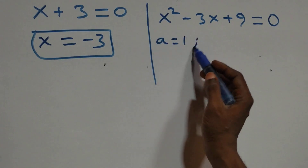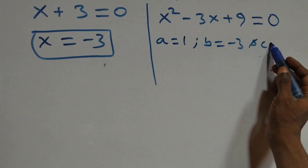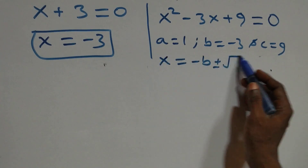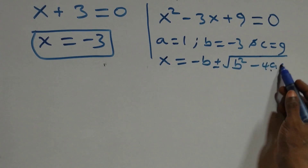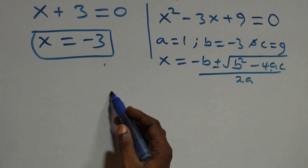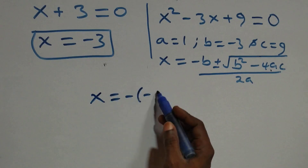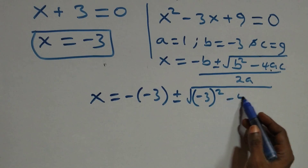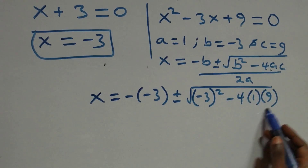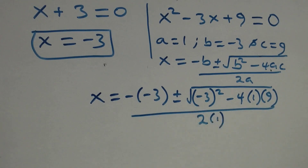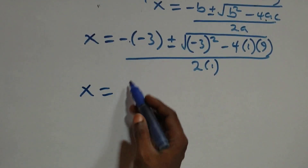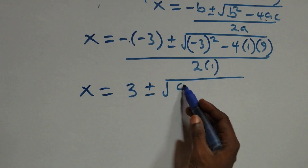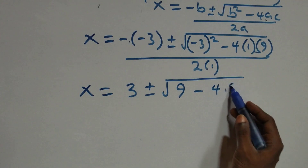For x² − 3x + 9 = 0, we have a = 1, b = −3, and c = 9. Applying the quadratic formula: x equals to minus b plus or minus square root of b squared minus 4ac, all over 2a. This becomes x equals to minus (−3) plus or minus square root of (−3)² minus 4 times 1 times 9, over 2 times 1. That gives 9 minus 4 times 9, over 2.